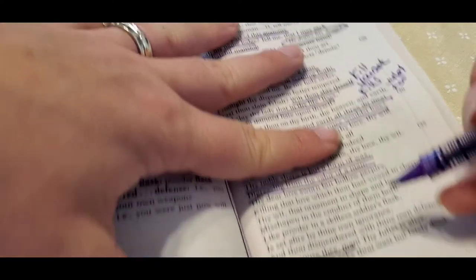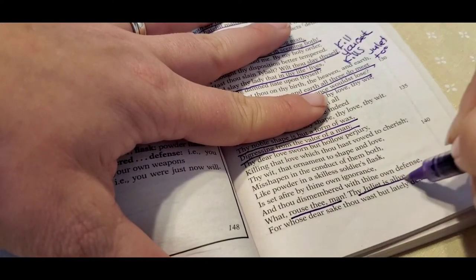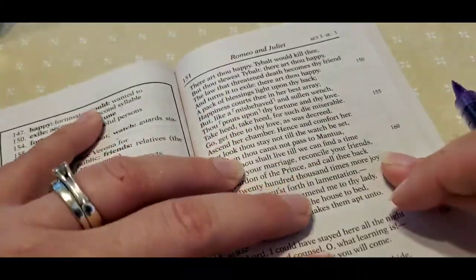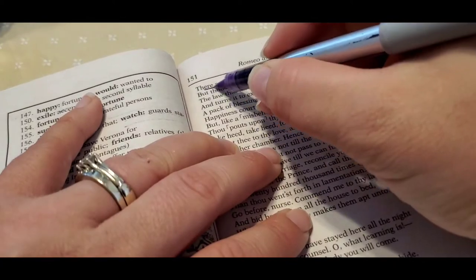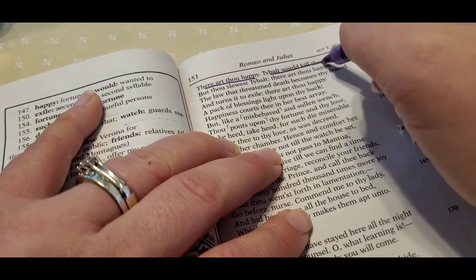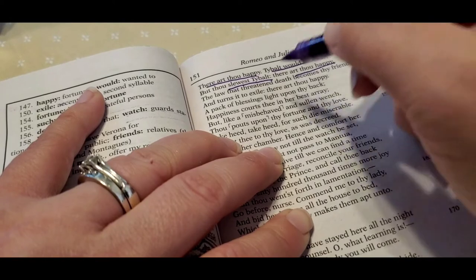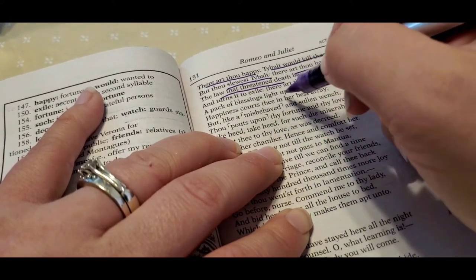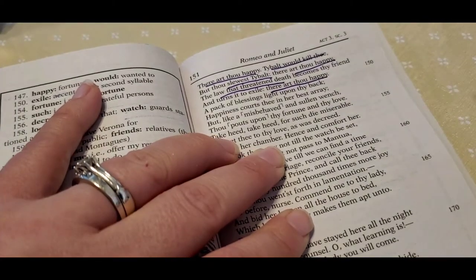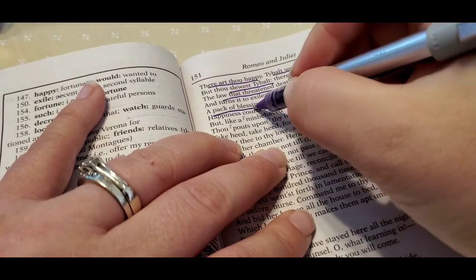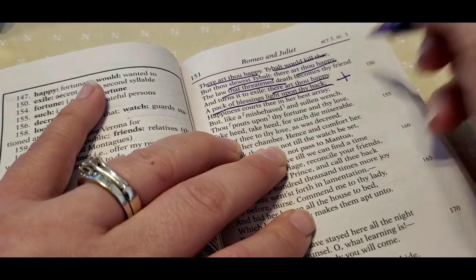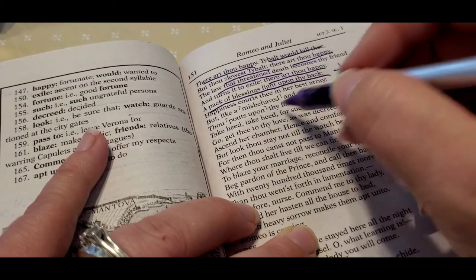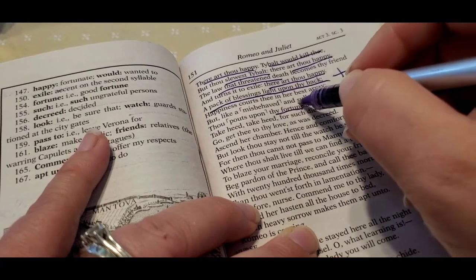And he says, you need to rouse up, be a man. Juliet is alive. And you need to understand that this is bigger than just you. And he goes, are you happy? Tybalt would have killed you, but you killed him. And he goes, are you happy? The law that threatened death becomes thy friend and is turning to exile. There are thou happy. You could see that. Are you happy? Are you happy? And he says, a pack of blessing lights upon your back. Happiness courts the best array. But you're behaving like a sullen wench. You pout upon my fortune, that destiny.